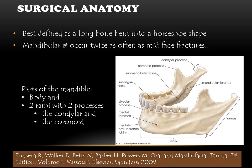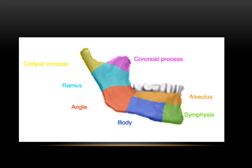Coming firstly to the surgical anatomy. The mandible is best defined as a long bone that is bent into the shape of a horseshoe. Mandible fractures occur twice as often as mid-face fractures. Coming to the parts of the mandible, we have a body, two perpendicular rami, the coronoid and the condylar process.